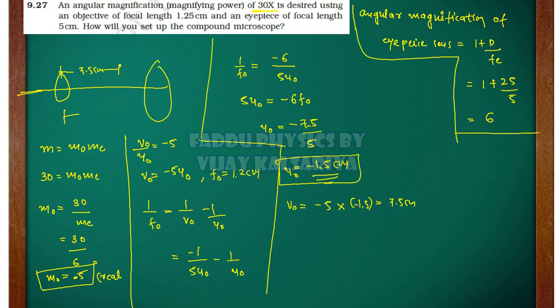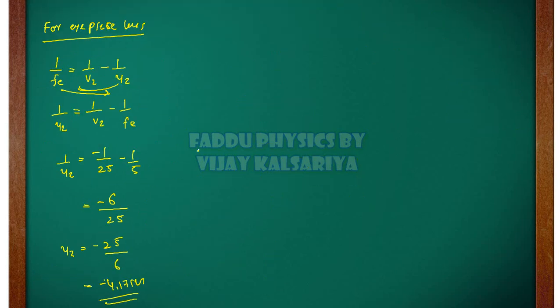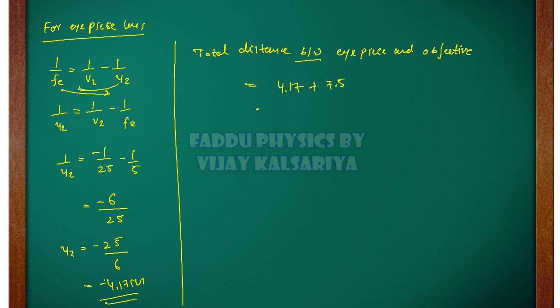So what will it be here? How much will it be here? 4.17 cm. So how much distance will it be? Total distance between eyepiece and objective, that will be 4.17 plus 7.5 is equal to 11.67. This will be your answer.